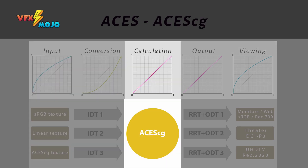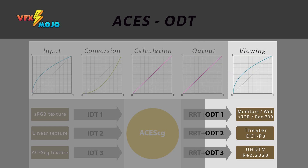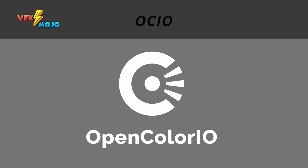Several ACES color spaces exist, but we are only interested in ACEScg, which is optimized for VFX work. All our calculations should happen in this color space. Step three is applying an RRT, which is a simplified set applying an ACES look. The last step is applying an ODT, which will convert your image to the color space of a viewing device — for example, your monitor. In our lighting pipeline, we will use OCIO to access the ACES color spaces.